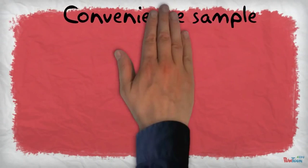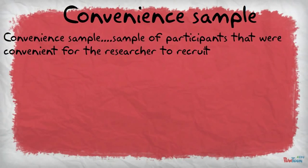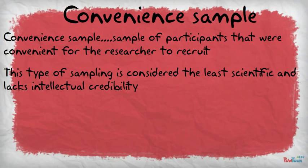A convenient sample is a sample of participants that were convenient for the researcher to recruit for a study. This type of sampling is considered the least scientific, and it really lacks intellectual credibility.